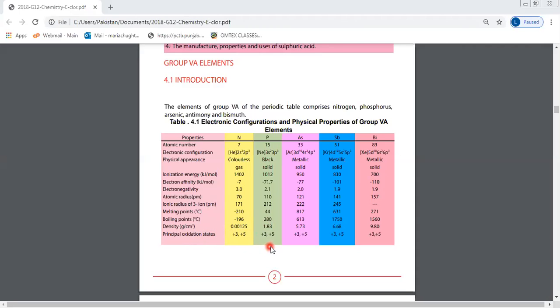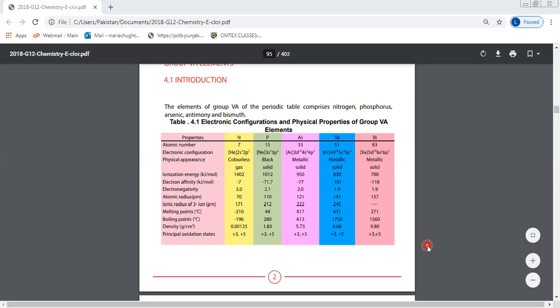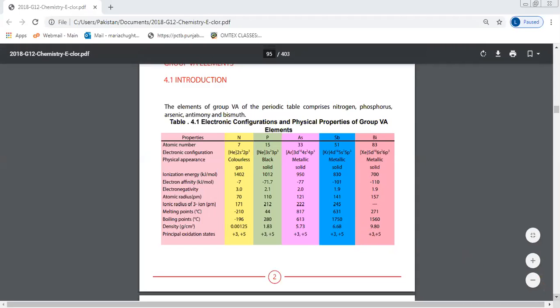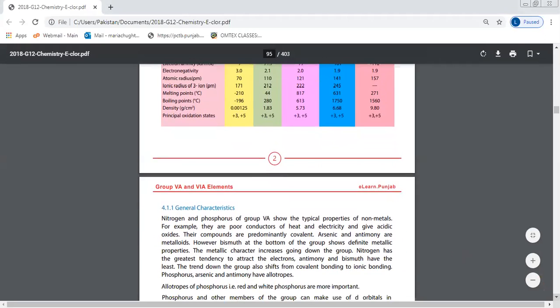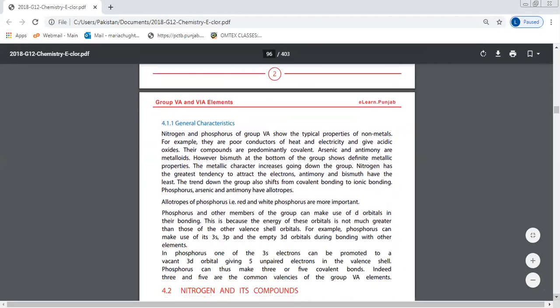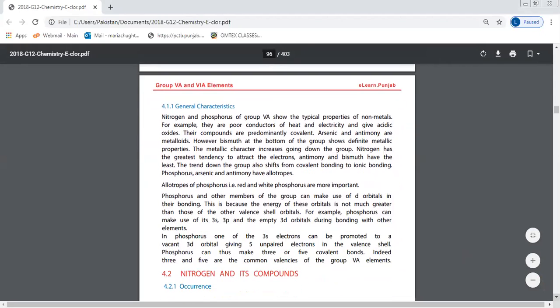Oxidation states are generally plus 3 or plus 5. They don't form ionic compounds but generally form covalent compounds, and in these covalent compounds the oxidation state is always plus 3 or plus 5, such as in NH₃, PCl₅, and PCl₃.